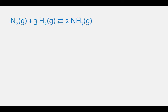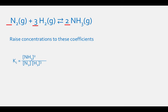For the reaction N2 gas plus 3 H2 gas in equilibrium with 2 NH3 gas, we do have coefficients before the reactants and products. Remember, we raise the concentrations or partial pressures to these coefficients. The Kc expression equals the concentration of NH3 squared, divided by the concentration of N2 times the concentration of H2 cubed. The Kp expression equals the partial pressure of NH3 squared, divided by the partial pressure of N2 times the partial pressure of H2 cubed.